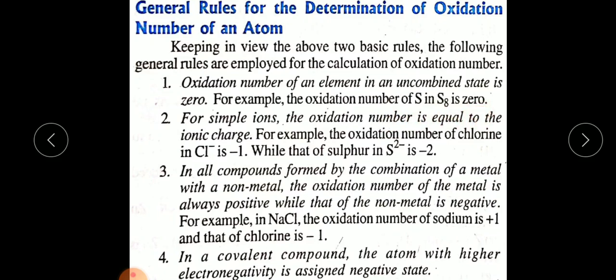Rule 2: For simple ions, the oxidation number is equal to the ionic charge. For example, the oxidation number of chlorine in Cl⁻ will be minus one, while that of sulfur in S²⁻ will be minus two.